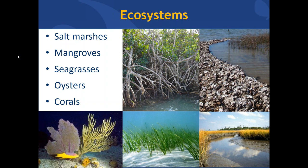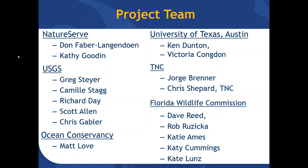We organized our project team around each ecosystem — five ecosystem-specific teams, one ecosystem services team, and one mapping team. Folks from USGS focused mostly on salt marshes and mangroves. The Florida Wildlife Research Institute focused on corals and indicator mapping work, along with Matt Love from Ocean Conservancy. From The Nature Conservancy, Jorge Brenner worked across teams on ecosystem services, and Chris Shepard headed the oyster team. The University of Texas at Austin led the seagrass team. NatureServe's role, myself and Don Faber-Langadoon, focused on methodology development to ensure a consistent set of products across teams.